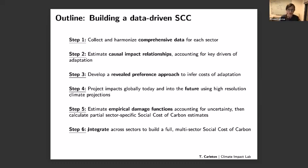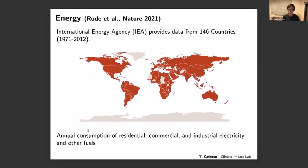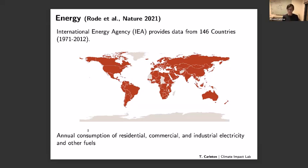Data collection is an incredibly important first step and looks different in each sector given differential data availability. In our work on energy consumption, we're relying on country-level energy consumption data from the International Energy Agency, covering about 146 countries, pooling consumption across residential, commercial, and industrial sectors, and separately modeling electricity demand from other fuels demand. Great spatial coverage here, but not fantastic spatial resolution — these are country-level estimates.